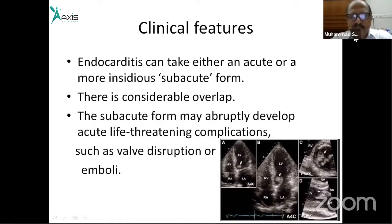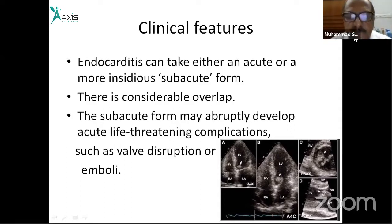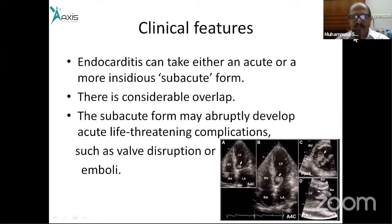The acute form presents with high fever and other major and minor symptoms — this is acute bacterial endocarditis. The subacute form develops more insidiously. Any patient with pre-existing non-valvular or valvular lesions — congenital or acquired — presenting with high-grade fever, changing murmur, splinter hemorrhage, and splenomegaly should be diagnosed as subacute bacterial endocarditis or infective endocarditis, unless proved otherwise.